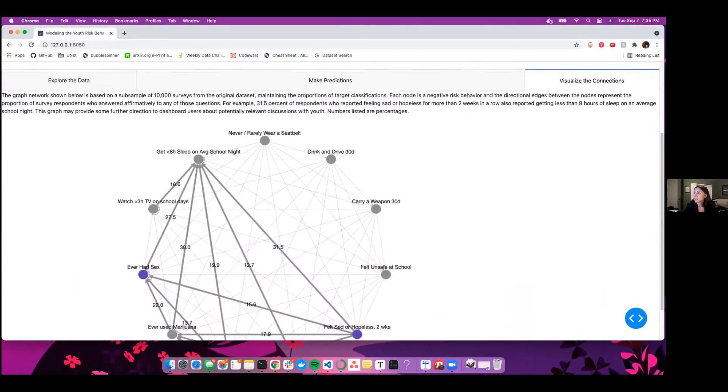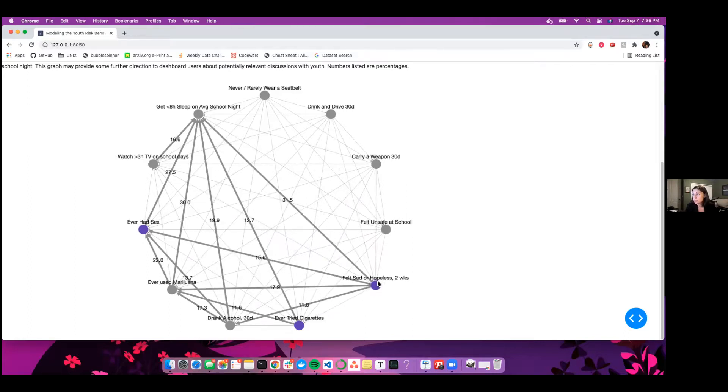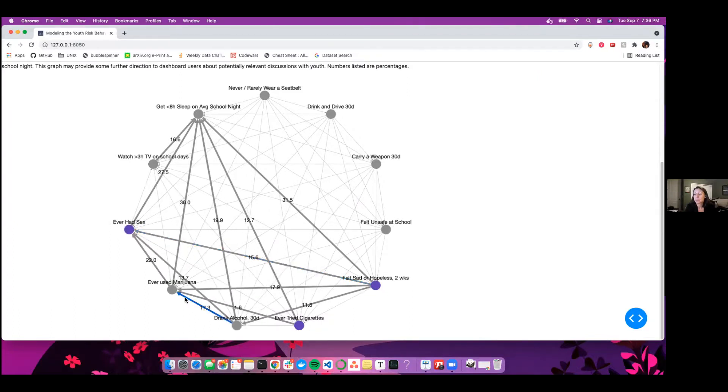Then lastly, on the last tab, we can visualize the connections between these negative behaviors with this graph network that I created. And we can see the three nodes felt sad or hopeless, ever tried cigarettes and never had sex. And I just highlighted the connections that had 10 or more percent response in common. So for example, of the students that reported feeling sad or hopeless for more than two weeks in a row, 15.6% of them also reported ever having sex. For drinking alcohol, 17.3% of them also reported using marijuana. So it does give us a little bit more information outside of just the three targets that we were looking at specifically.